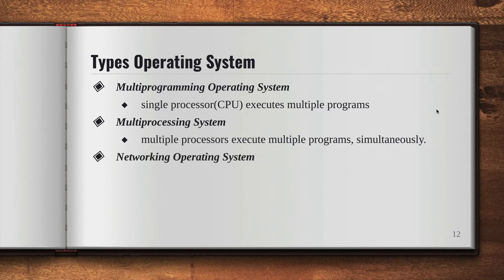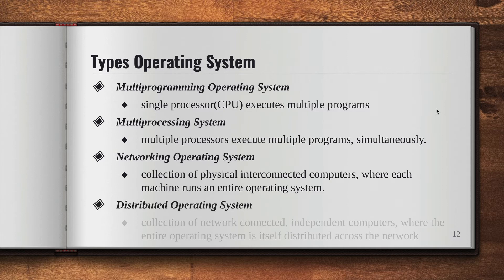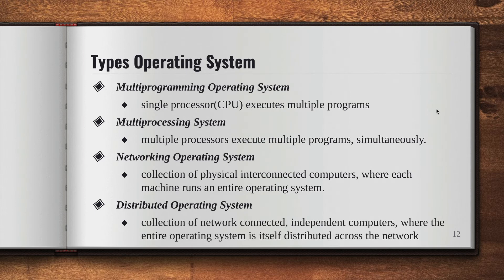You also have the network operating system, which is basically a collection of physically interconnected computers where each machine runs an entire operating system. Then you have the distributed operating system, which is a collection of network-connected independent computers.